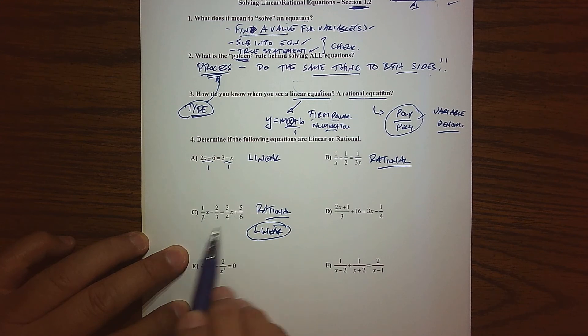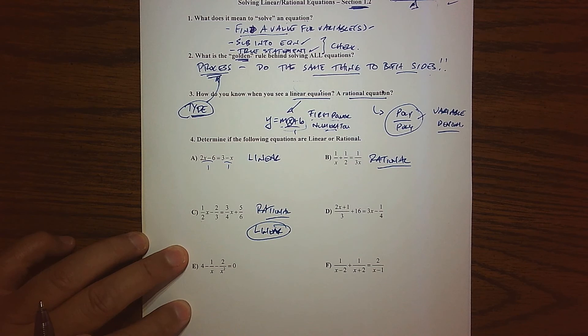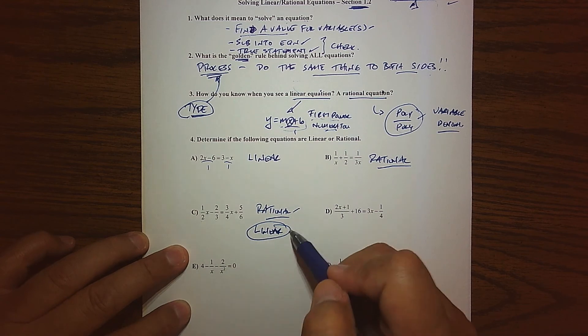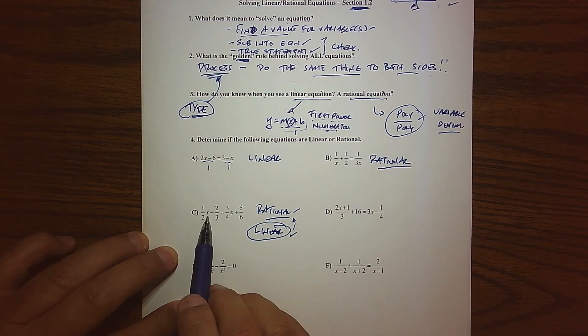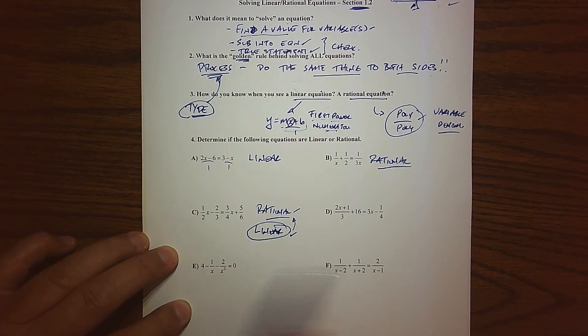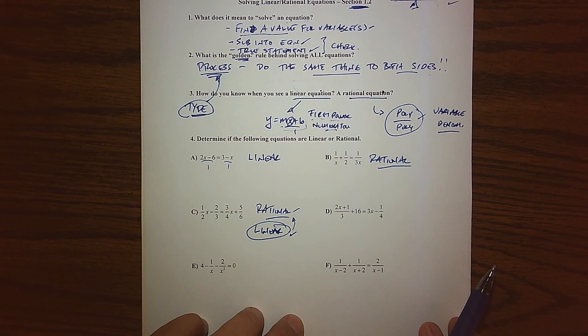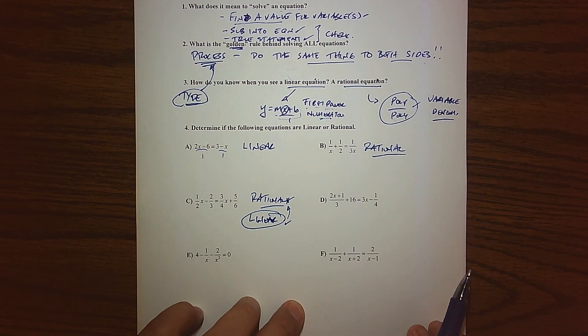So on both sides, we have the linear y equals mx plus b form. So it's technically a line that the coefficients happen to be fractions. But you can kind of treat this as both. But in effect, it's a linear equation. Also notice that the x is up in a numerator and it's to a first power. So technically speaking, that is a linear equation, although you could get away with calling it a rational one.